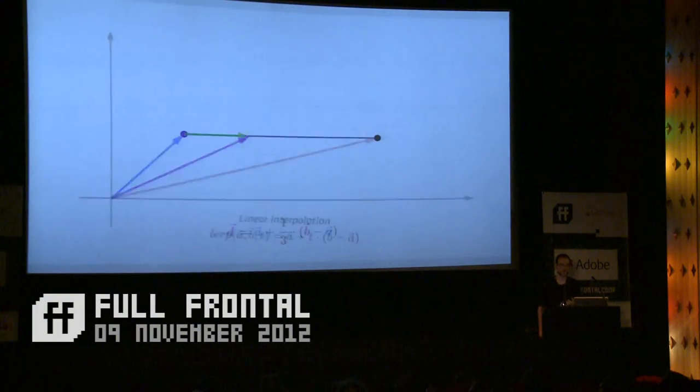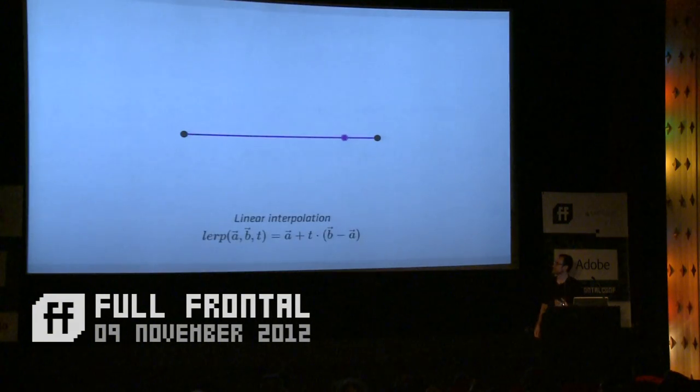This operation, which is called linear interpolation, which is just moving between two points, is actually incredibly common, incredibly important, shows up everywhere. If you're blending two images, setting an opacity on an image, this is what's going on inside every single pixel. And this is the primitive that Bézier curves are made out of.